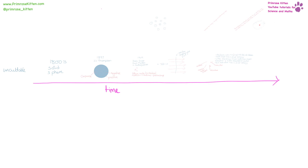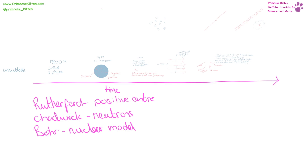The model of the atom has changed a lot over time, and it's changed because we have new developments and discoveries. From ancient Greece, where they developed the word atom — uncuttable — to Dalton, where it was a solid sphere. Then JJ Thomson, who discovered electrons, gave us the plum pudding model: a positive sphere with negative bits dotted through it. Rutherford did the gold foil experiment and worked out that the atom had a solid centre. Bohr developed the nuclear model of the atom. Rutherford gave us the positive centre — the nucleus. Chadwick added in neutrons, and then Bohr developed the nuclear model we use today, with a positive centre and electrons orbiting outside.